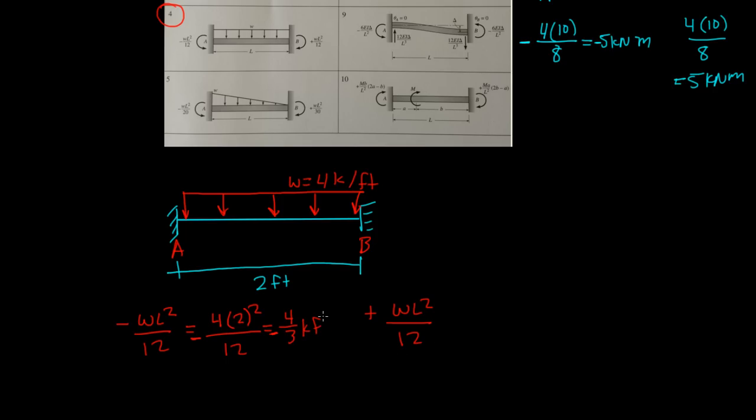And on the right side, the weight is four times L squared, which is two squared over 12. Again, this is four times four over 12, or 16 over 12. Divide the top and bottom by four, you get four, 12 divided by four is three. So, on the right side, the fixed-end moment going clockwise is four over three kip foot.